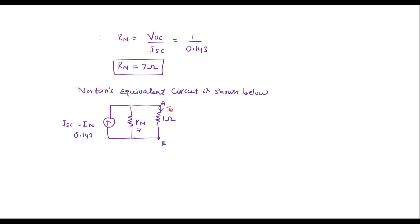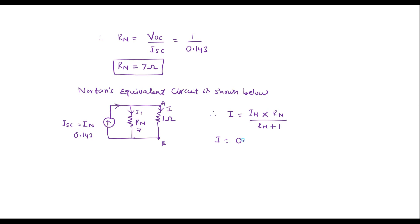Now we calculate the current through the 1 ohm resistor using the current division rule. The total current IN divides between Rn and the 1 ohm resistor. The current through the 1 ohm resistor is: I = IN × Rn / (Rn + 1) = 0.143 × 7 / (7 + 1) = 0.125 amps. This is the current through the 1 ohm resistor calculated using Norton's theorem.